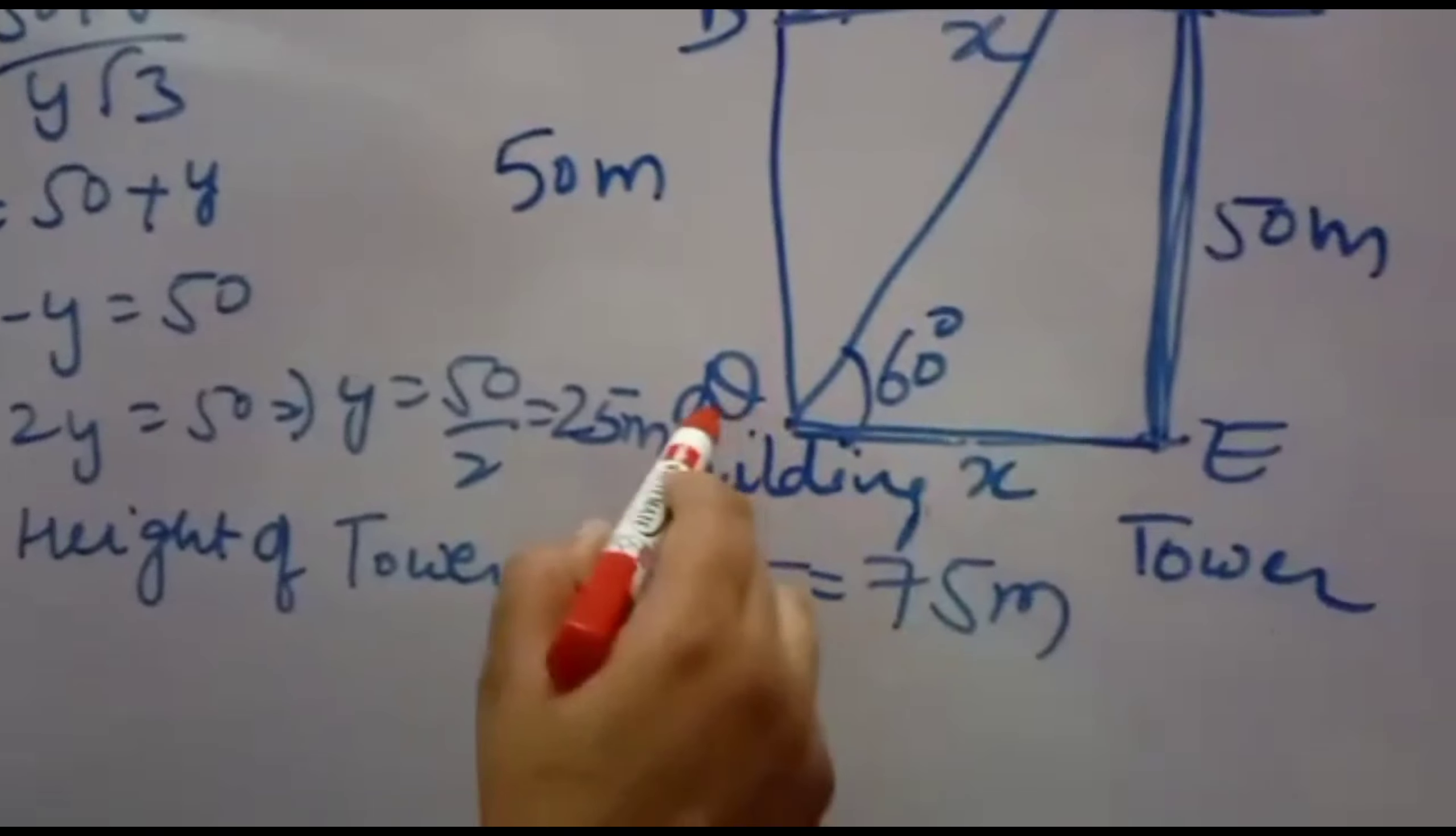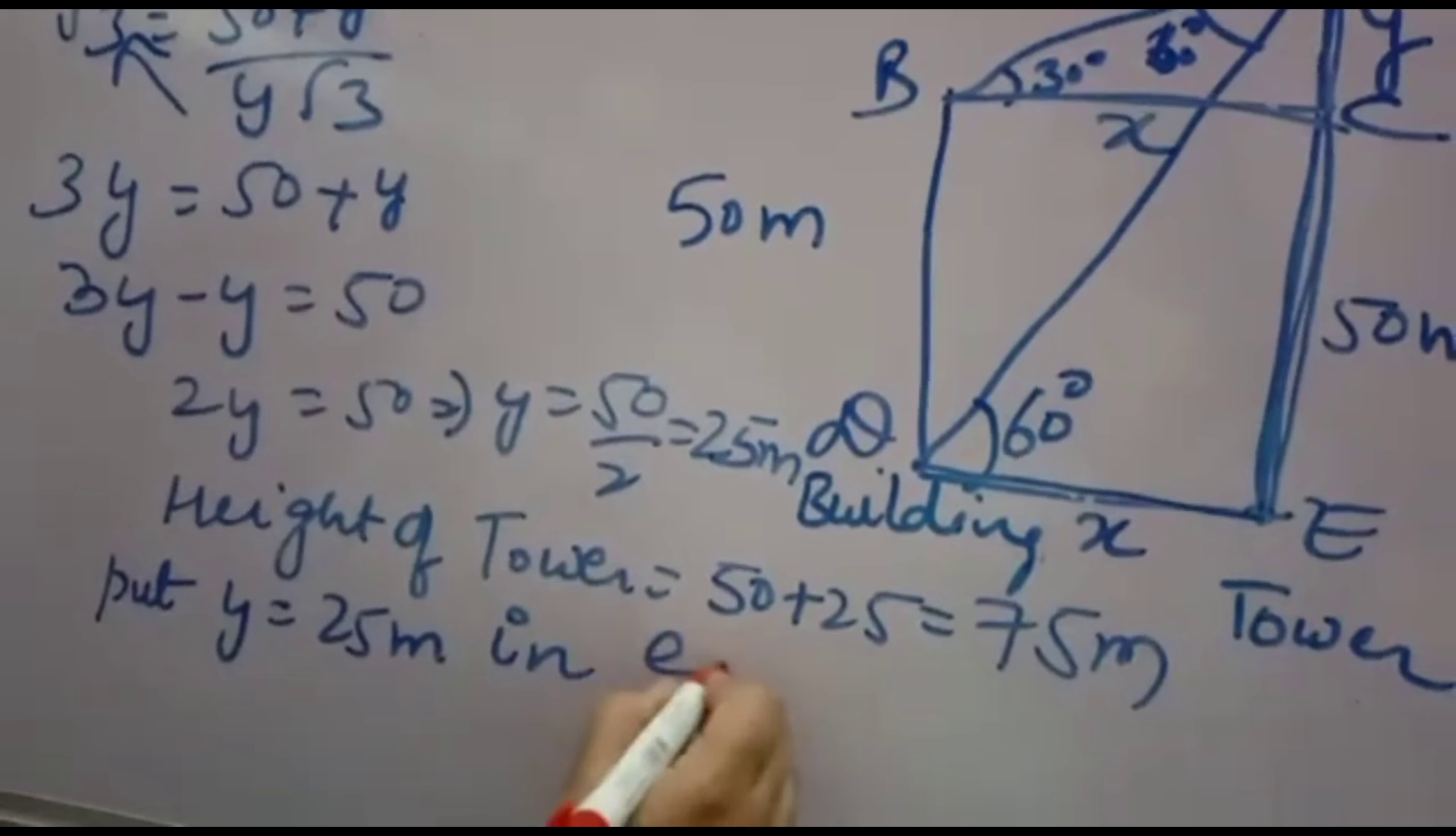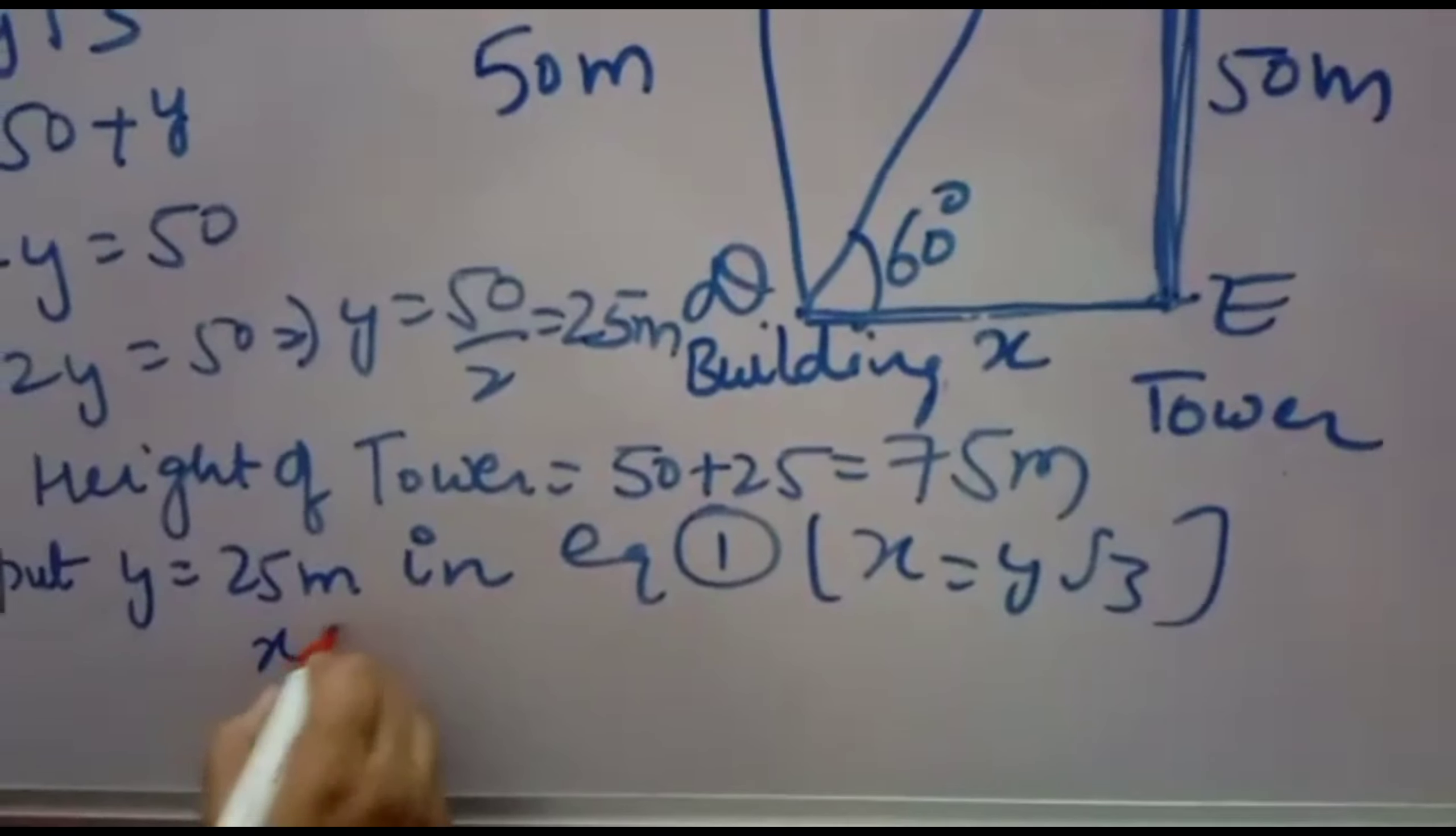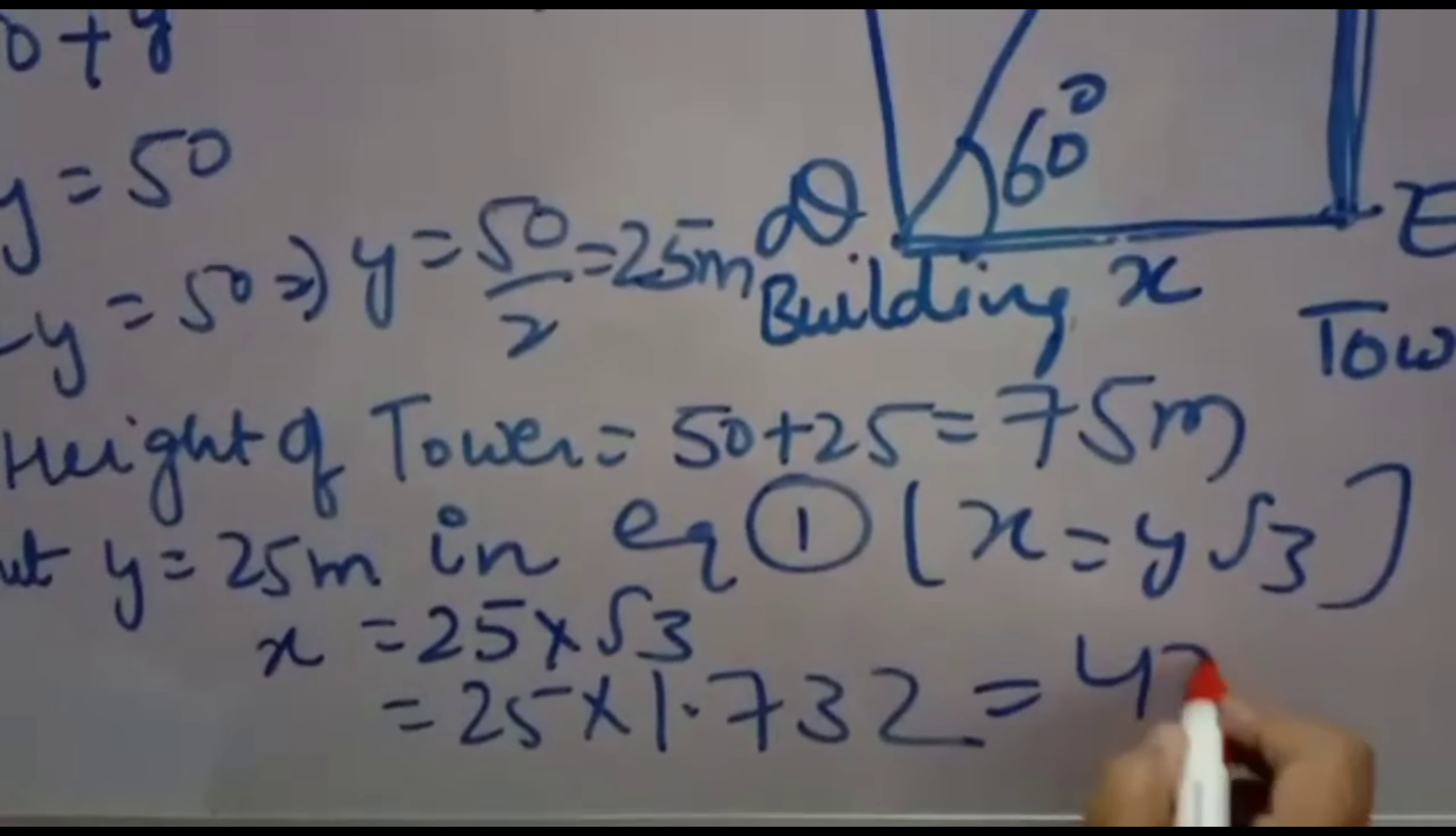Now you want x also. The horizontal distance between tower and building. So x you can find by putting value of y. y is equal to 25. In equation first. What was equation number first? You will get x is equal to 25. Y value is 25 into root 3. Now 25 into root 3 is 1.732. When you multiply 25 by 1.732. You will get 43.25.